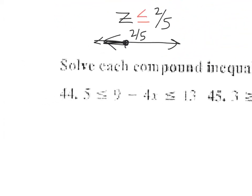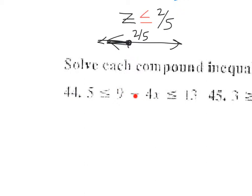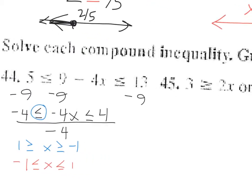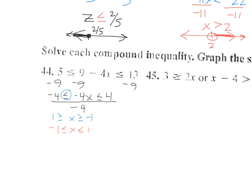Now these are compound inequalities. To solve for x, whatever I do I apply to all three sides. I subtract 9 on all three sides, giving negative 4 less than or equal to negative 4x less than or equal to 4. Dividing everything by negative 4 flips the inequalities, giving negative 1 less than or equal to x less than or equal to 1. The graph has a closed dot at negative 1, a closed dot at 1, and is shaded in between.